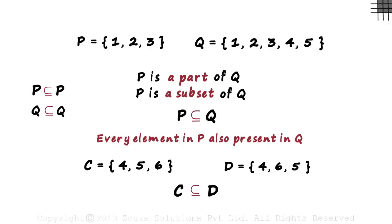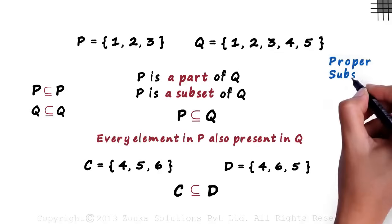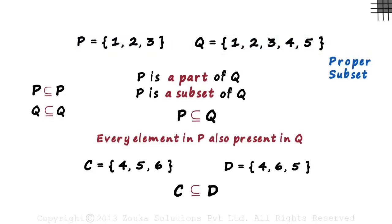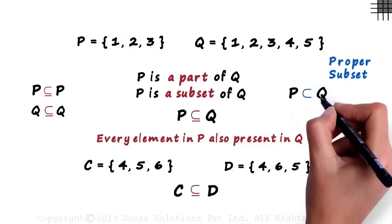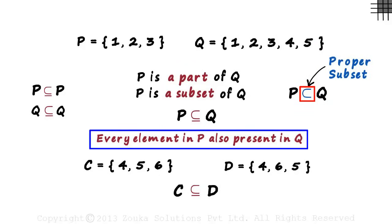For some reason, this does not seem entirely correct and that gave rise to a new concept of proper subset. Look at sets P and Q. Set P is a part of set Q, but there is at least one element in set Q which is not present in set P. We say that set P is a proper subset of set Q. This sign indicates proper subset.